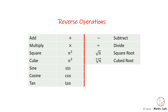We need to talk about reverse operations, or you could call them opposite operations or inverse operations. We already know a few of these from our studies. The reverse operation of adding is subtracting, the reverse operation of multiplying is dividing, the reverse operation of squaring is square root, and the reverse operation of cubing is cubed root.